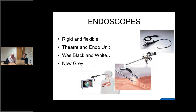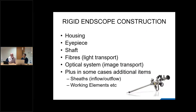More and more surgery is being done through flexible instruments. An example is NOTES — Natural Orifice Therapeutic Endoscopic Surgery — which explored removing the gallbladder through the stomach. It didn't take off but there was significant interest at the time. If we focus on rigid endoscopic instrumentation, it's a rigid telescope made up of an eyepiece, a housing with ocular aspects, lenses, and a shaft containing an optical system and a light system.